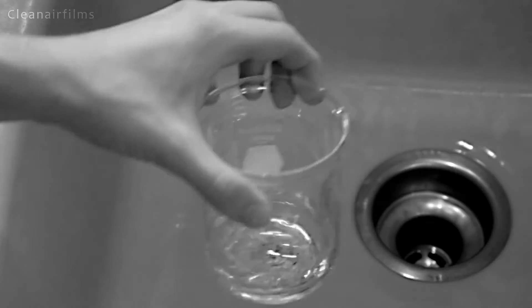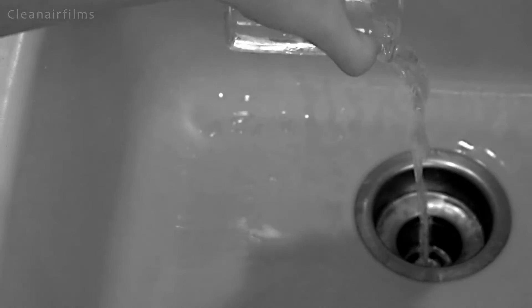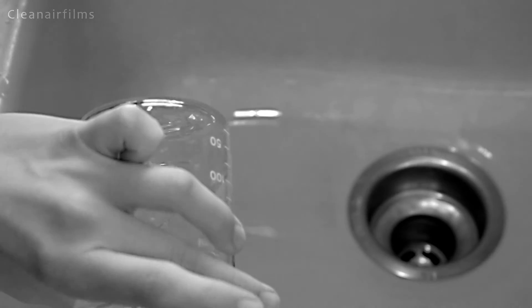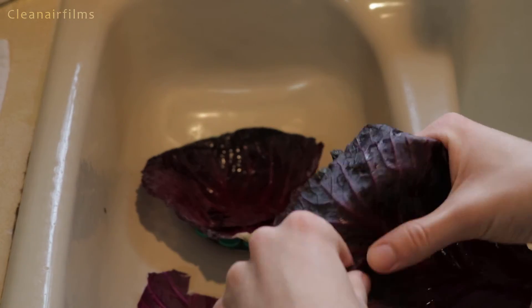We have already washed out the beakers with distilled water. We start by making a pH indicator with purple cabbage.